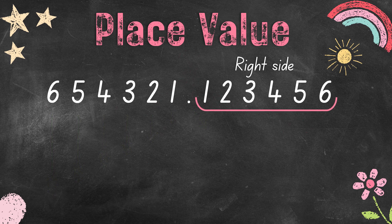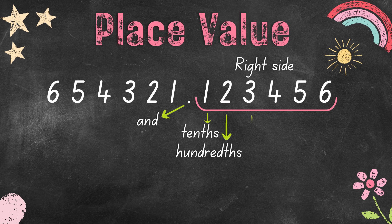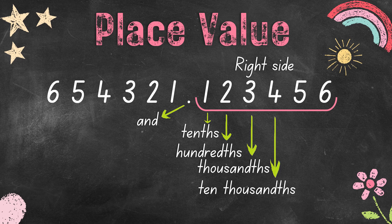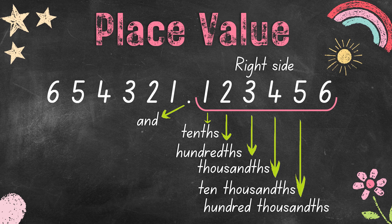Now let's talk about the numbers to the right side of the decimal point. The decimal point is read as 'and.' The first digit to the right of the decimal point is the tenths place, and the second digit to the right is the hundredths place.